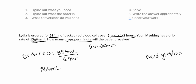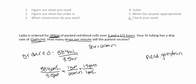We start with 384 mL over 3.5 hours. We get rid of hours first: one hour equals 60 minutes, and we cross off hours. Now to get rid of mL, we put one mL on the bottom and 15 drops on top, and we can cross off our mLs. We're left with drops per minute — exactly what we want. Multiply across the top: 5,760. Multiply across the bottom: 210. Divide them out and we get 27.428. Round to a whole number since we can't have a partial drop — the answer is 27 drops per minute.